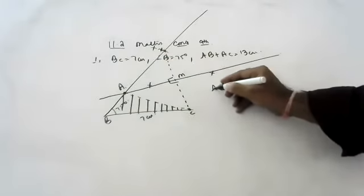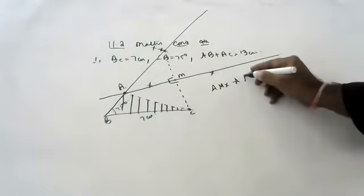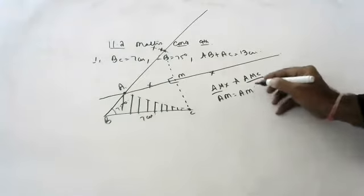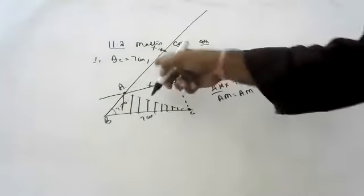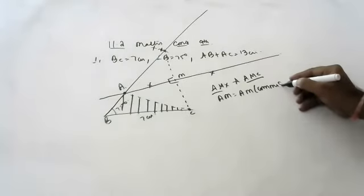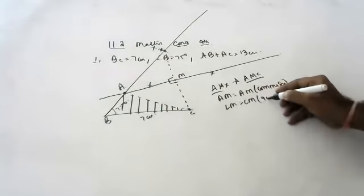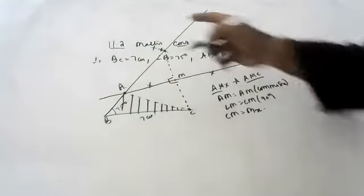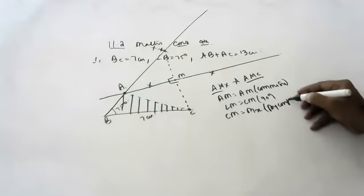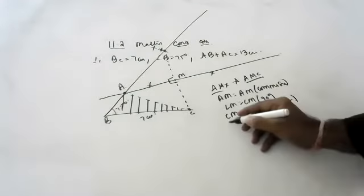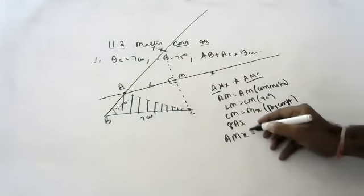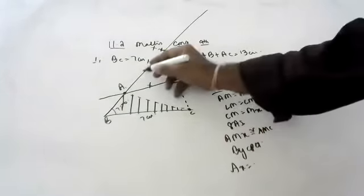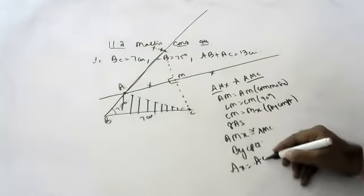There are two triangles. AM is equal to AM — it is the common side. Angle M is equal to angle M — 90 degrees. CM is equal to MX — because by construction, this is the perpendicular bisector. So by SAS, triangle AMX is congruent to triangle AMC. By CPCT, AX is equal to AC.